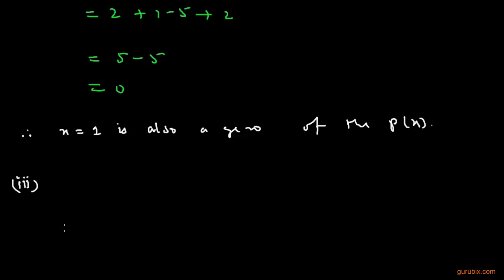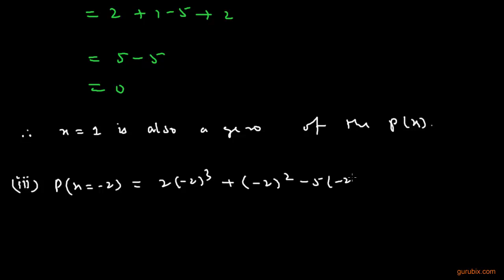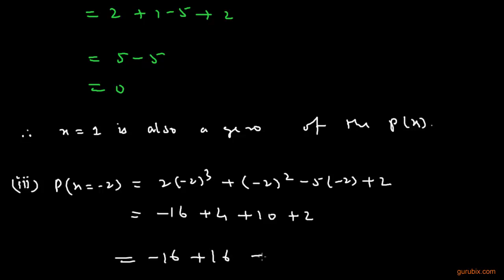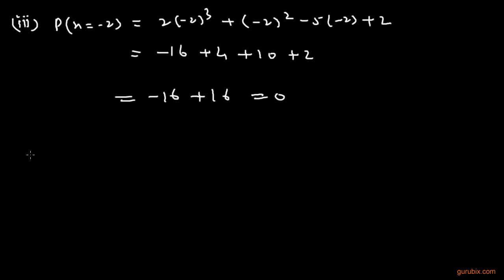Now we shall check for x = -2: p(-2) = 2 × (-2)³ + (-2)² - 5 × (-2) + 2. Calculating this gives -16 + 4 + 10 + 2, which equals -16 + 16 = 0. This means x = -2 is also a zero of p(x).